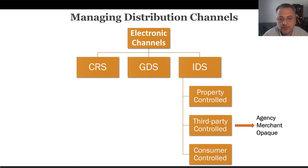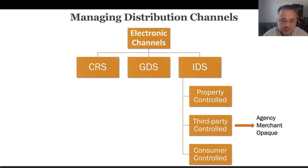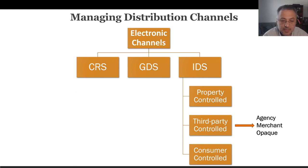Under the opaque model, room buyers do not know the brand name until the sale is finalized — it can happen in an auction or bid format. In an auction, prices are set with certain parameters but property information is not disclosed until the customer accepts. In a bid format, customers name their own price given the area and quality level, and if the bid is accepted, they are told the hotel name. Overall, these models continue to evolve and you need to understand their value to your business.